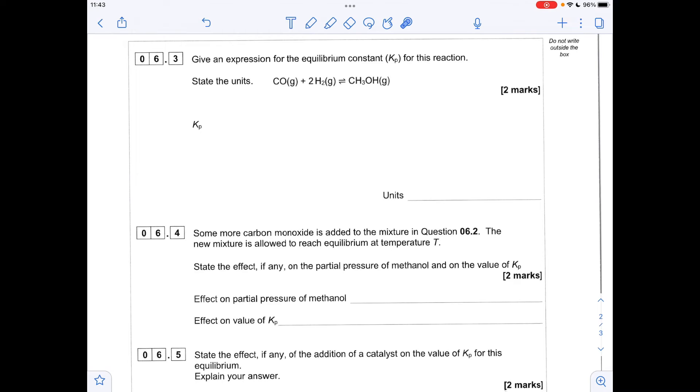Moving on to part 3, you've got to write the Kp expression and give its units. As always, any equilibrium constant has products over reactants, and the balanced numbers will be powers. For this equilibrium, it's the partial pressure of methanol divided by the partial pressure of carbon monoxide multiplied by the partial pressure of hydrogen squared. For the units, I've put the units of all the terms into the expression. They're going to cancel, which leaves us with 1 over kPa squared, and then we'll bring that up to the top and flip its sign.